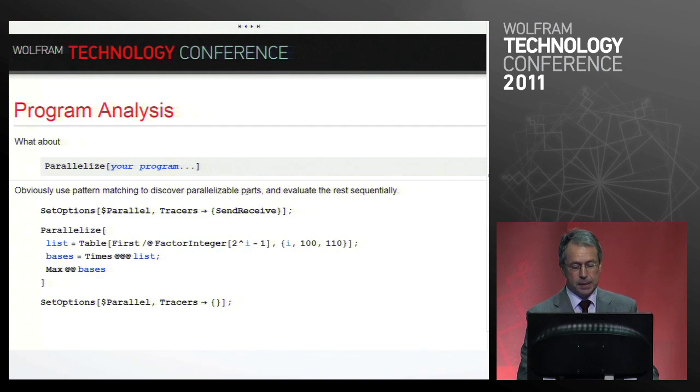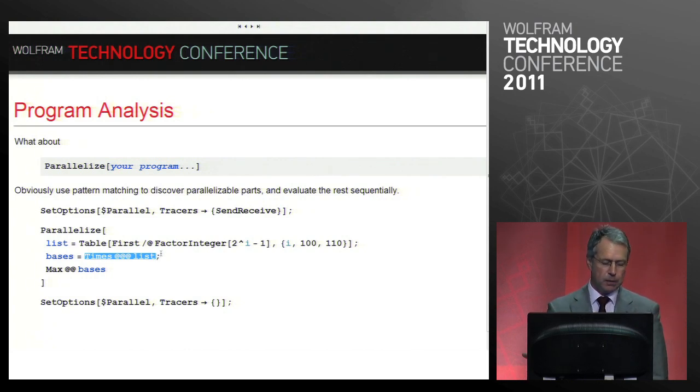The next step is program analysis. I've shown you how to automatically parallelize individual things like mappings, tables and so on. But what about the whole program? Here is a program that computes a table, assigns it to a variable, then multiplies all the... what you get as a result is a list of list of numbers. It multiplies all the sub-lists and then takes the maximum of these results. Here I can just wrap parallelize around my whole program and I can show you what it does.